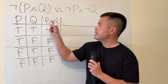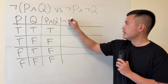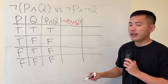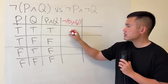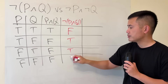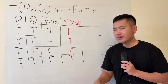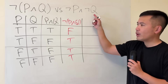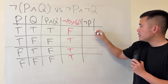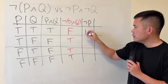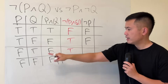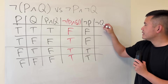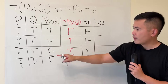Then we'll have to negate P and Q. So for not (P and Q), we just negate all the P∧Q results, giving us false, true, true, true. Now let's compute not P — that will be false, false, true, true — and not Q will be false, true, false, true.